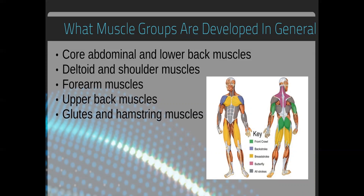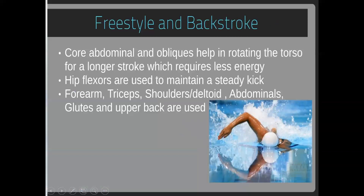The main muscle groups developed in general include core abdominal and lower back muscles, deltoid and shoulder muscles, forearm muscles, upper back muscles, gluteals, and hamstrings. In the front crawl, glutes and triceps are primarily used. In backstroke, the deltoids are used. In breaststroke, the quadriceps are majorly used. In butterfly, the trapezius is involved. Across all strokes, the abdominals, sternocleidomastoid, and spinal extensors are active.